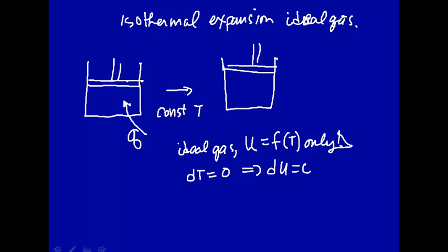So in that case, using the first law, dU is equal to dQ plus dW. If dU is equal to zero, this means that dQ is equal to minus dW.